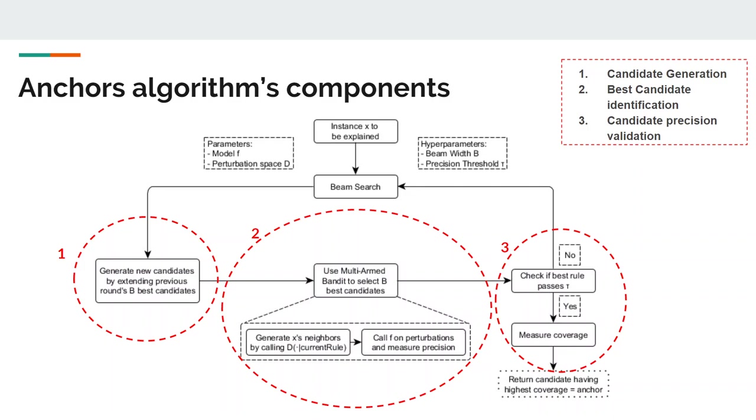The anchors approach uses four main components to find explanations. The first one is candidate generation. In this phase, the method generates new explanation candidates. In the first round, one candidate per feature x gets created and fixes the respective value of possible perturbations. In every other round, the best candidates of the previous round are extended one feature predicate that is not yet contained.